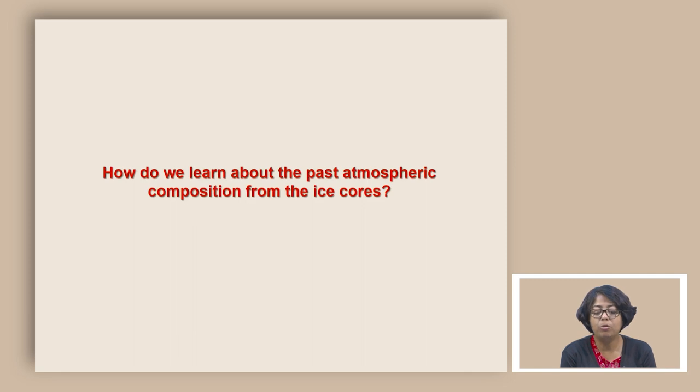How do we learn about past atmospheric composition from the ice cores? Ice deposits every year, especially in places like Antarctica where it is very cold. Every year when the ice deposits, these ice flakes have a specific structure and it has a structure which can also trap a lot of air in it and those airs as these things get deposited year after year and get compressed, those air bubbles basically get entrapped.